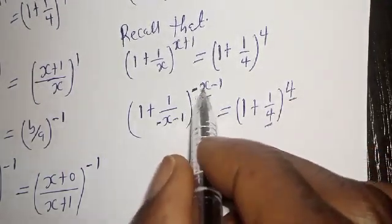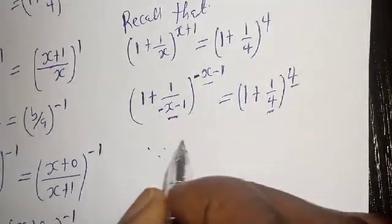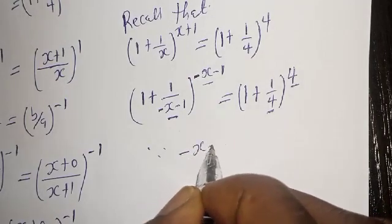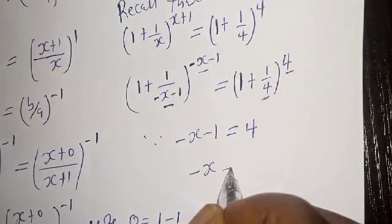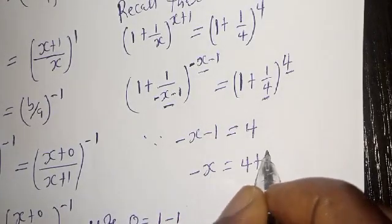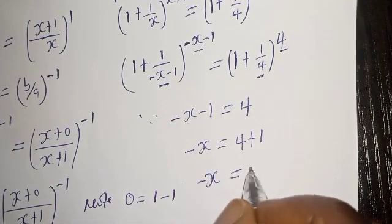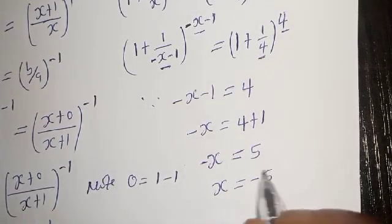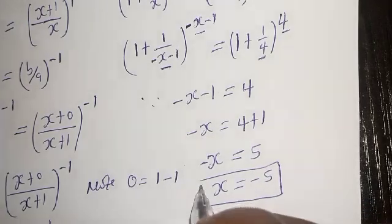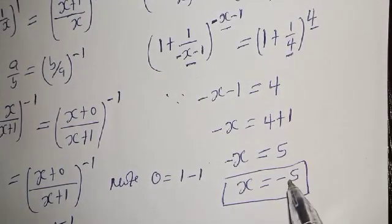Here we have minus s minus 1 and the exponent on the right is 4. Therefore, minus s minus 1 is equal to 4. From here, minus s is equal to 4 plus 1, which gives minus s equals 5, so s is equal to minus 5. This is the final answer. Thank you for watching. Don't forget to like, share, comment and subscribe. Bye-bye.